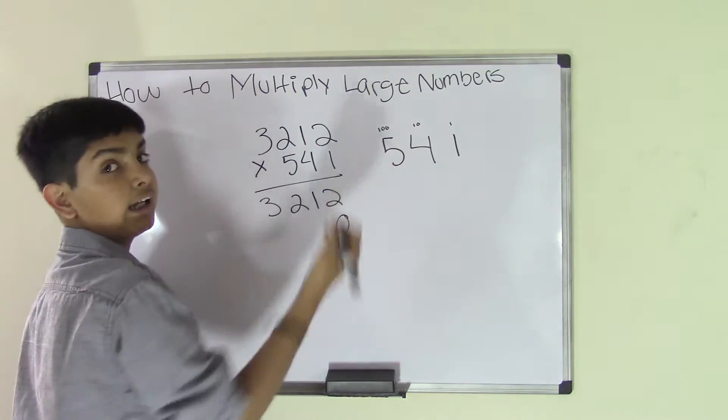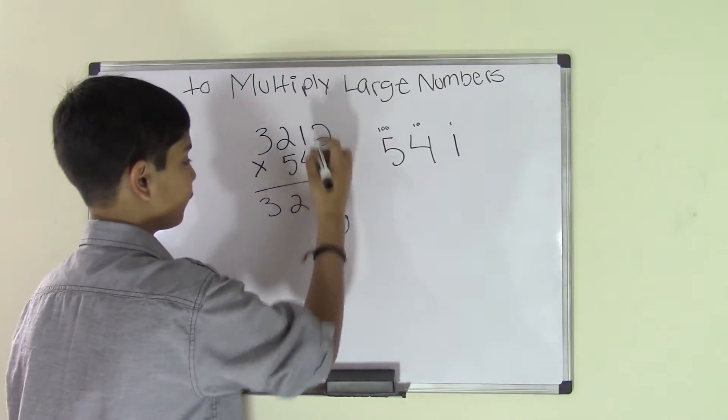So 4 times 2 is 8, 4 times 1 is 4, 4 times 2 is 8 again, 4 times 3 is 12. We move on to the next number.